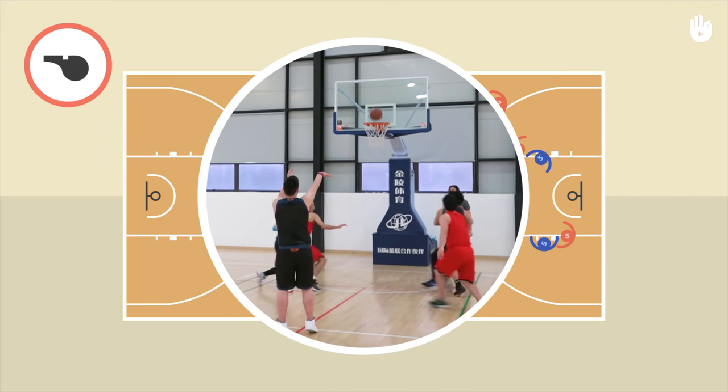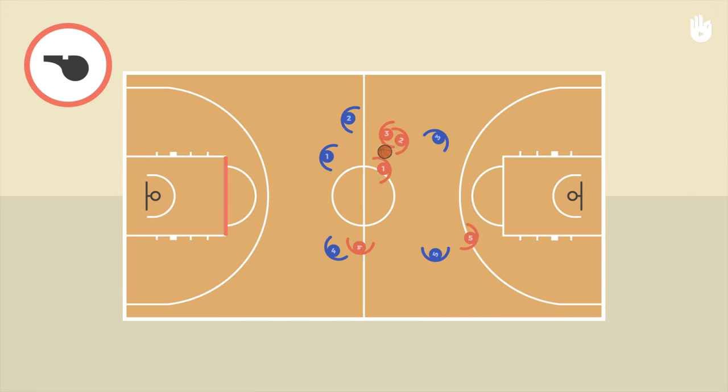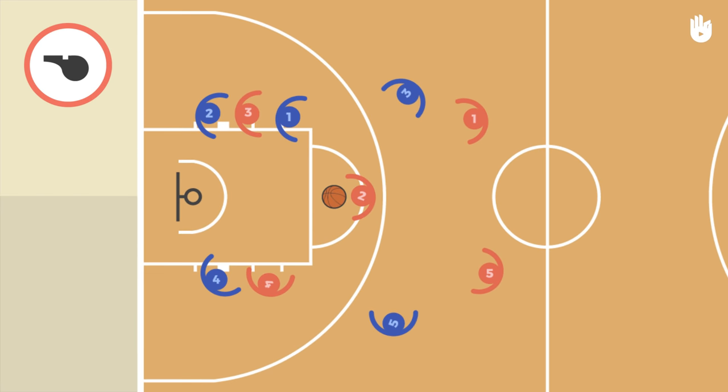Free throws are shot from a line placed near the edge of the key and are worth one point. The key, also called the free throw lane, is the rectangular area drawn beneath both hoops.